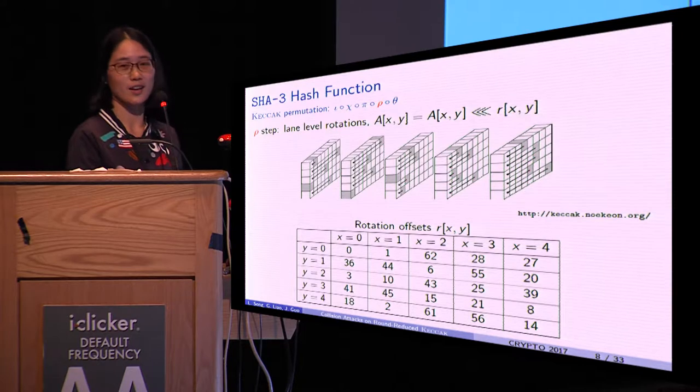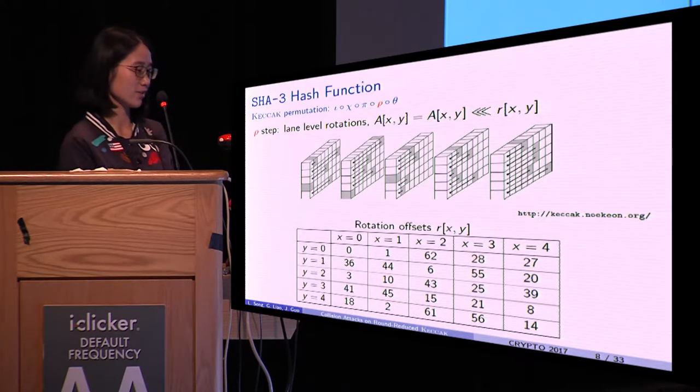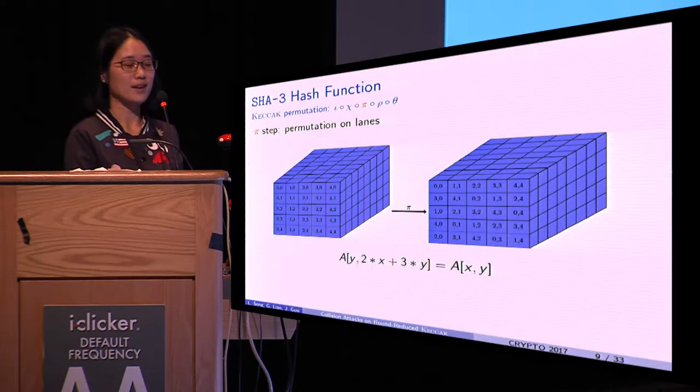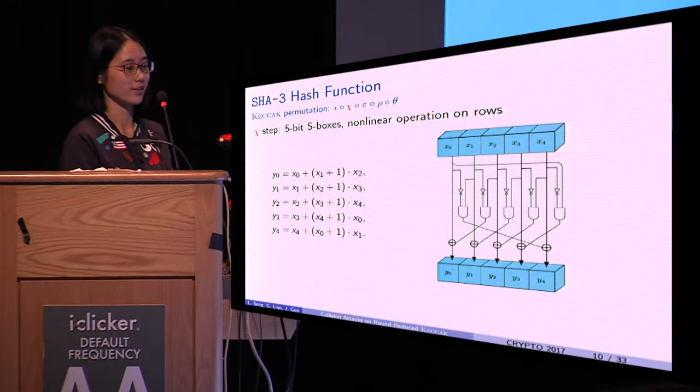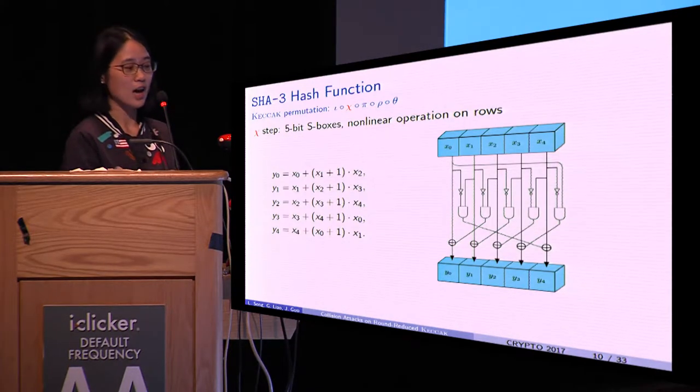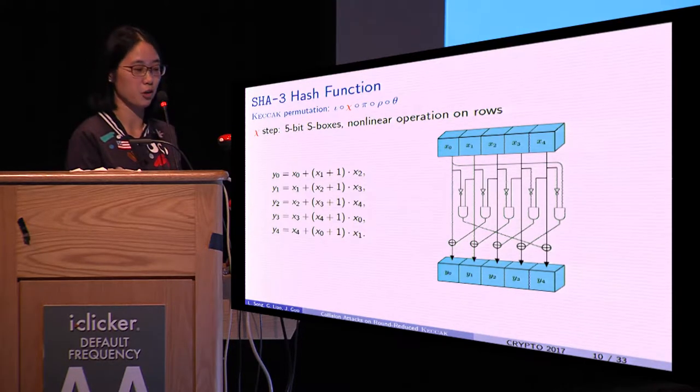Rho step is lane-level rotations. Pi step is the permutation on lanes.